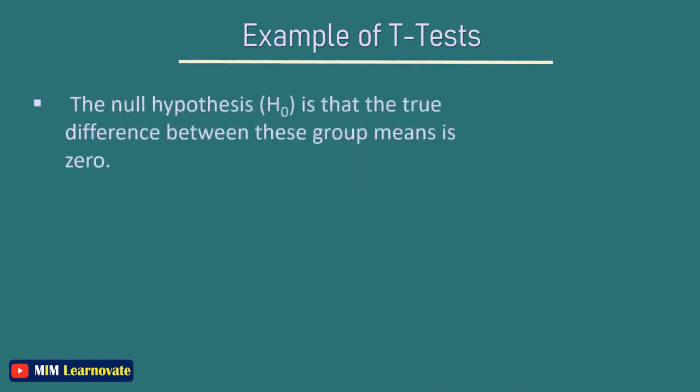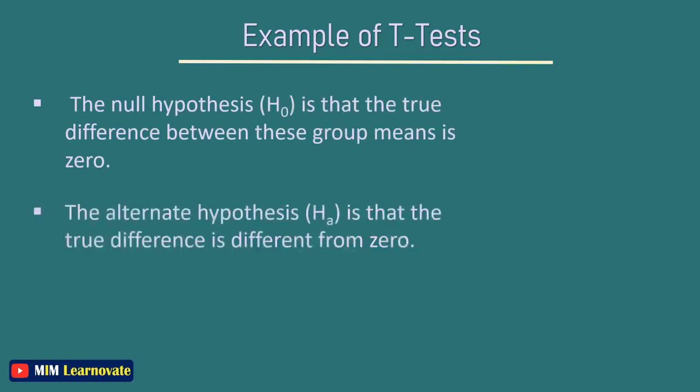The null hypothesis H0 is that the true difference between these group means is zero. The alternate hypothesis HA is that the true difference is different from zero.